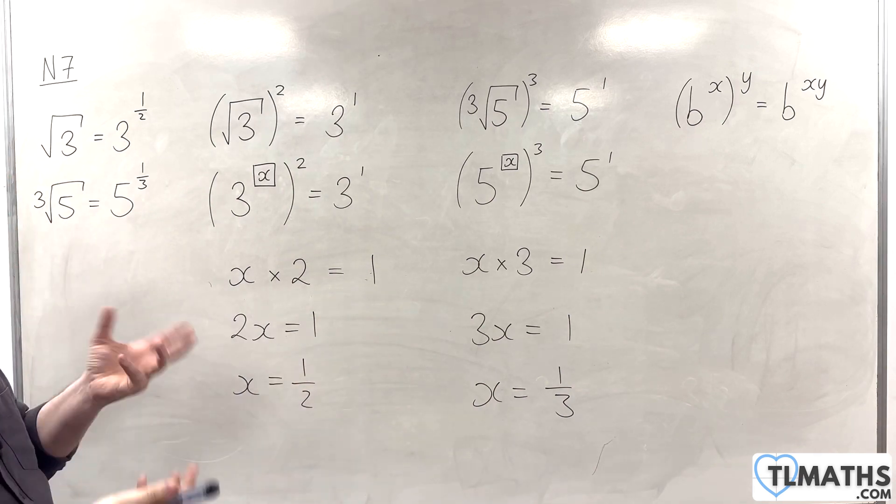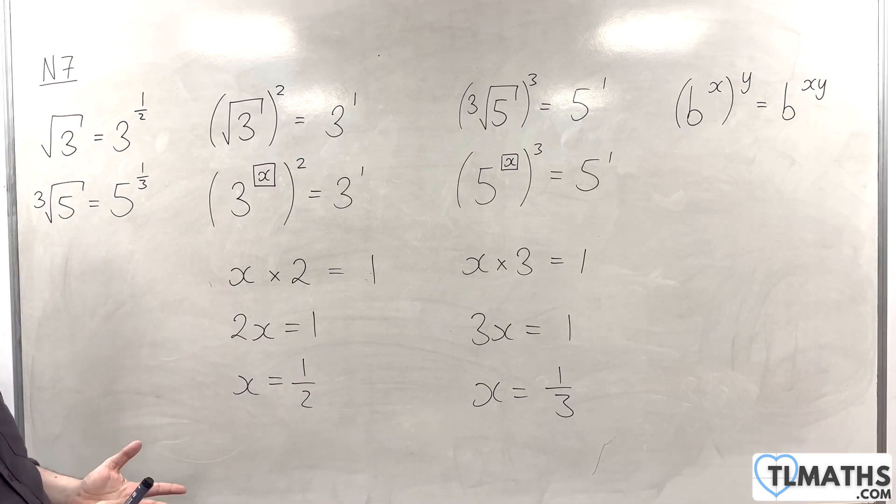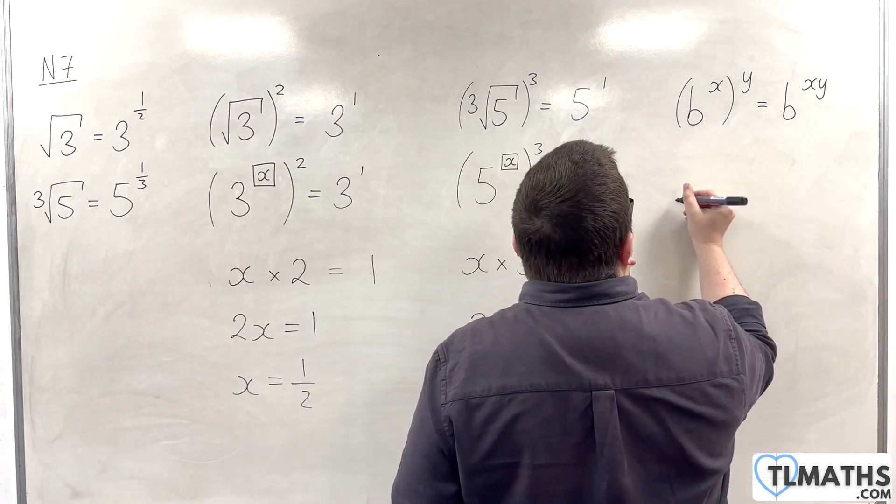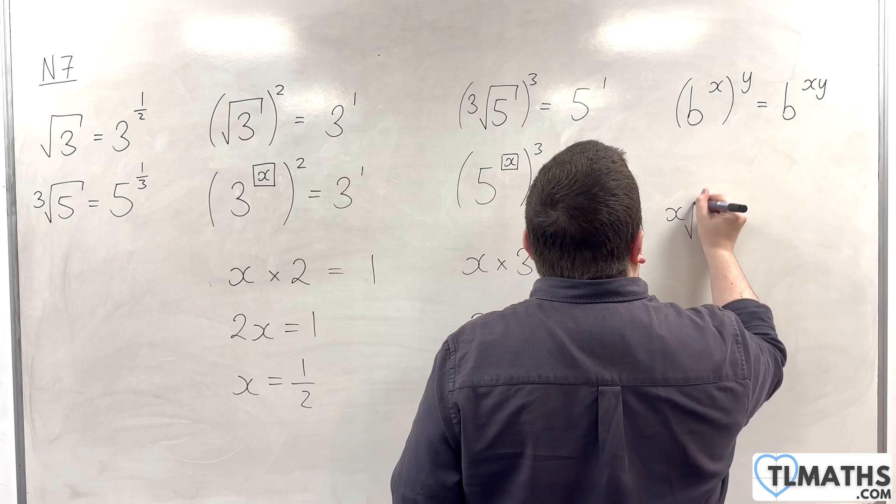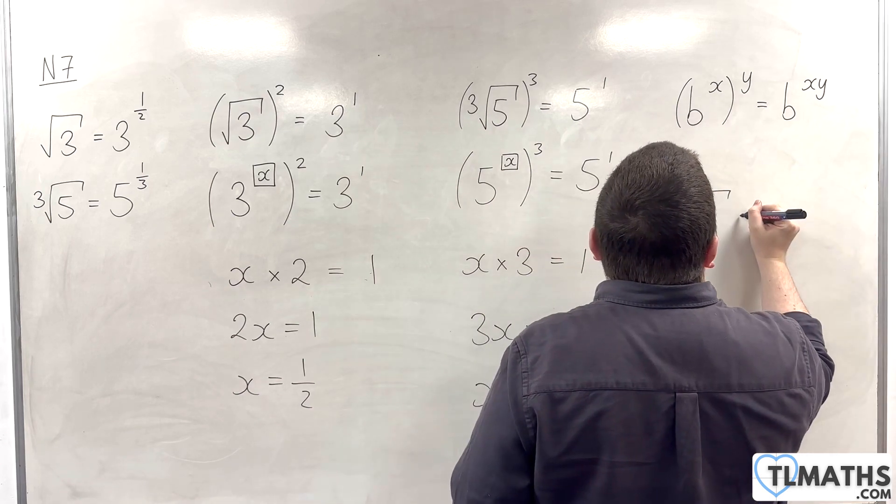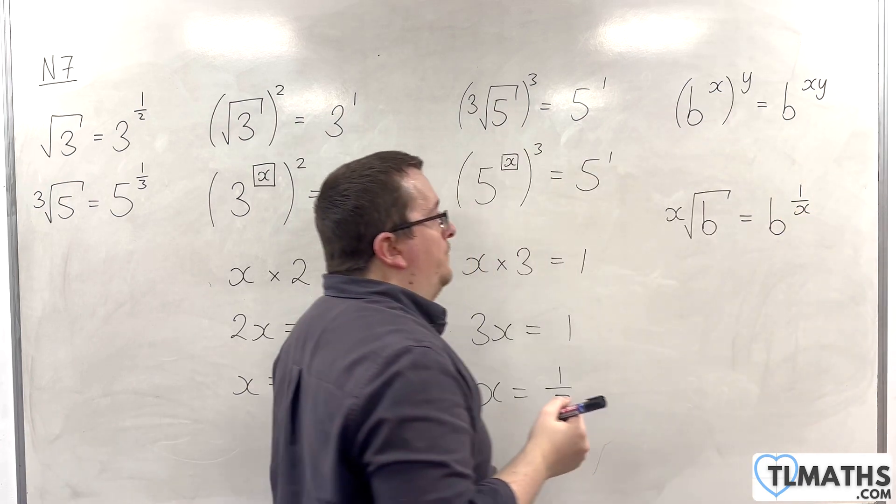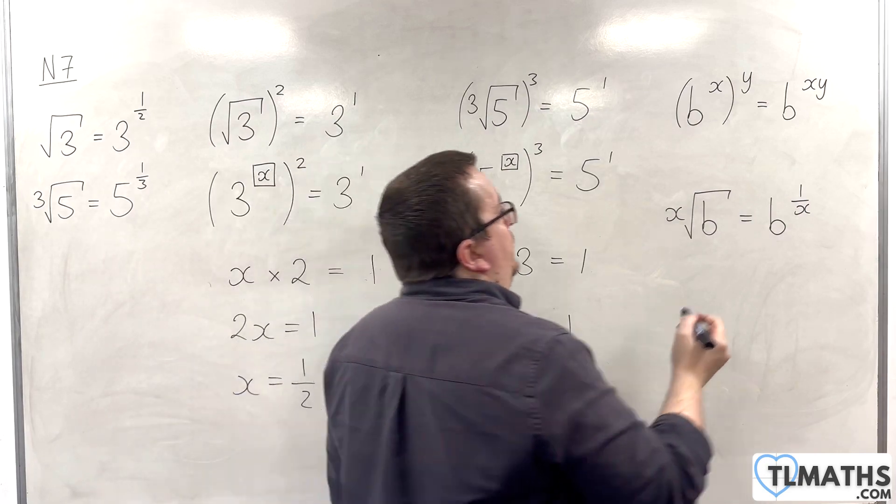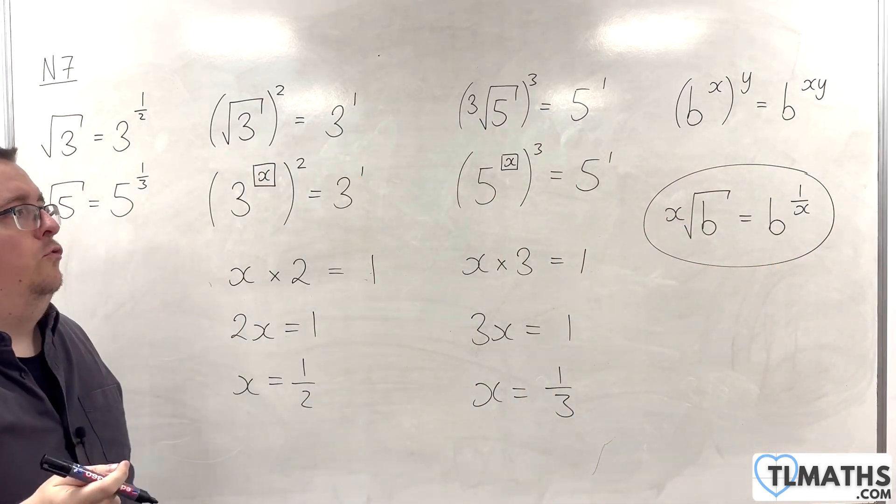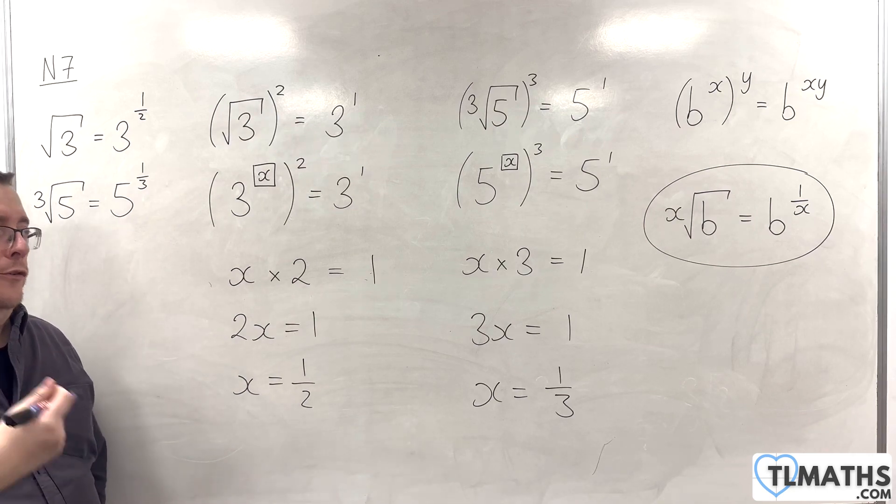So, what we're seeing is that, in general, I can use that rule to show that the x-th root of b is the same as b to the power of 1 over x. So, this is another rule that we can add to our rules of indices, our laws of indices.